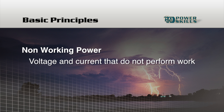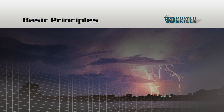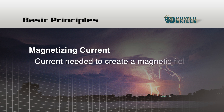Again, a key factor is what the current is used for. Some devices do not use all the current that they draw to perform useful work. For example, an induction motor needs a certain amount of current, called magnetizing current, to create a magnetic field in the motor. The magnetizing current does not perform work. Only after the magnetic field is created by non-working magnetizing current can working current operate the motor and perform work.